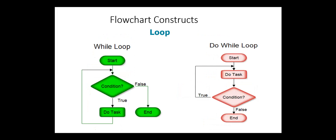The main loop constructs are while, do-while, and for. In the while loop, a condition is tested. If the condition is true, we perform a group of statements under the while condition, and we repeat testing the condition. Whenever the condition is false, we exit the loop.